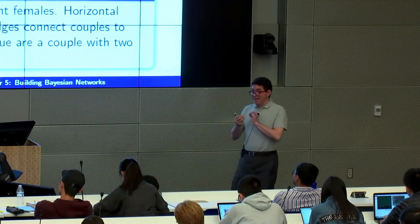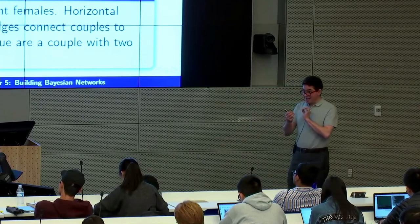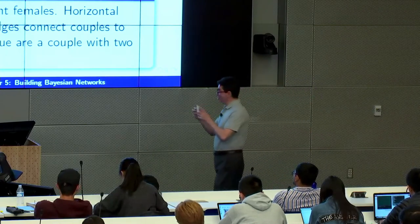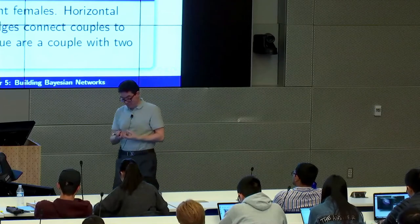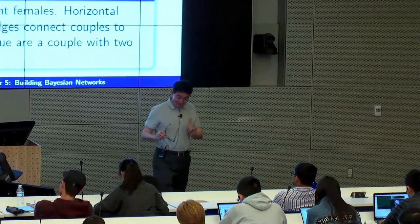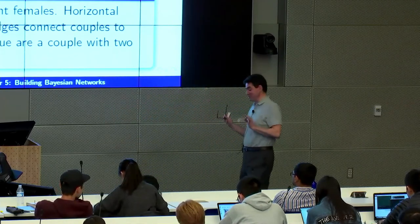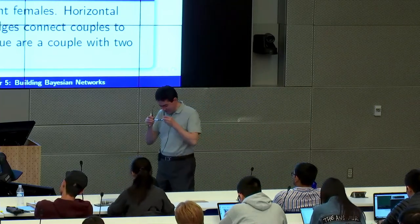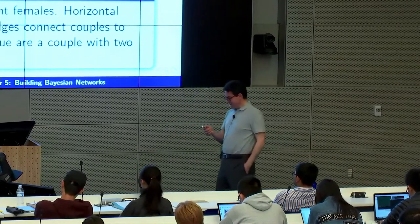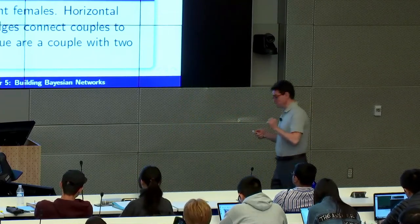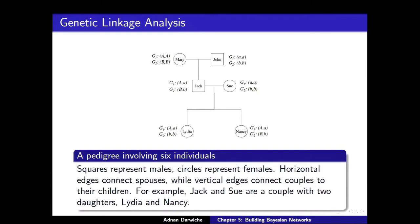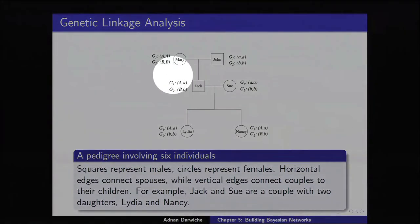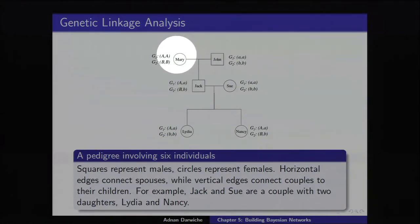There is a key thing about how inheritance works that's going to play into all of this. It's like a really Sherlock Holmes kind of thing — putting evidence together and making intriguing conclusions. So let's start with the pedigree. In the pedigree, squares are males, circles are females, horizontal edges indicate couples, and vertical edges indicate offspring.